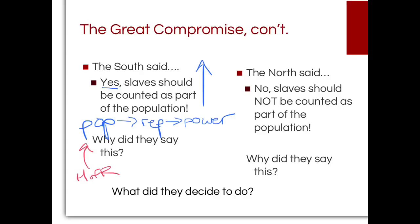The North said slaves should not be counted for representation. However, the North argued that if slaves were going to be counted at all, they should be counted as part of the tax base. The South rejected this, arguing that slaves were property and should not be taxed, but should count toward population. Finding a middle ground was obviously very difficult.